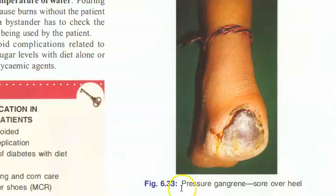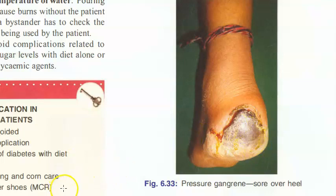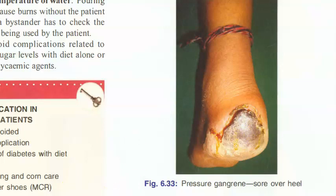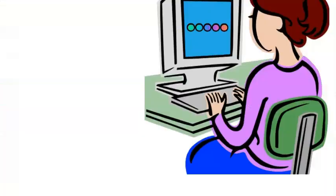You can see the pressure sore over the heel — over bony prominences, you will find them more. These people often have neuropathy, so they will not be feeling pain. It will be painless for them. If there were pain, people would respond and fix it, but here they are not responding.